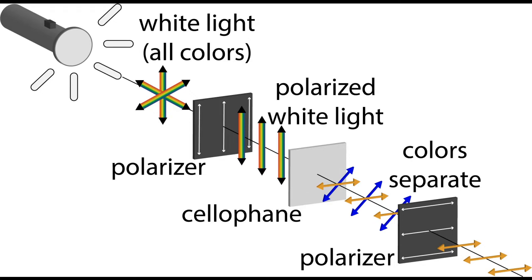So, as you just saw, I was able to pick out the blue color from the white light passing through the cellophane. This diagram shows that if I rotate the second polarizer by 90 degrees, I can pick out a different color, a yellowish color. If you tried this activity at home, you might see some different colors, depending on what kind of cellophane you use.